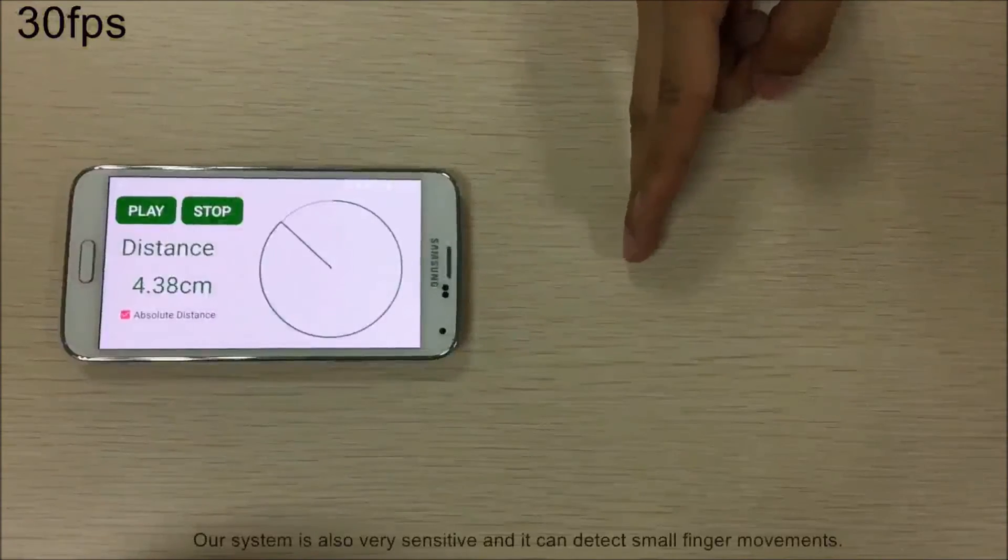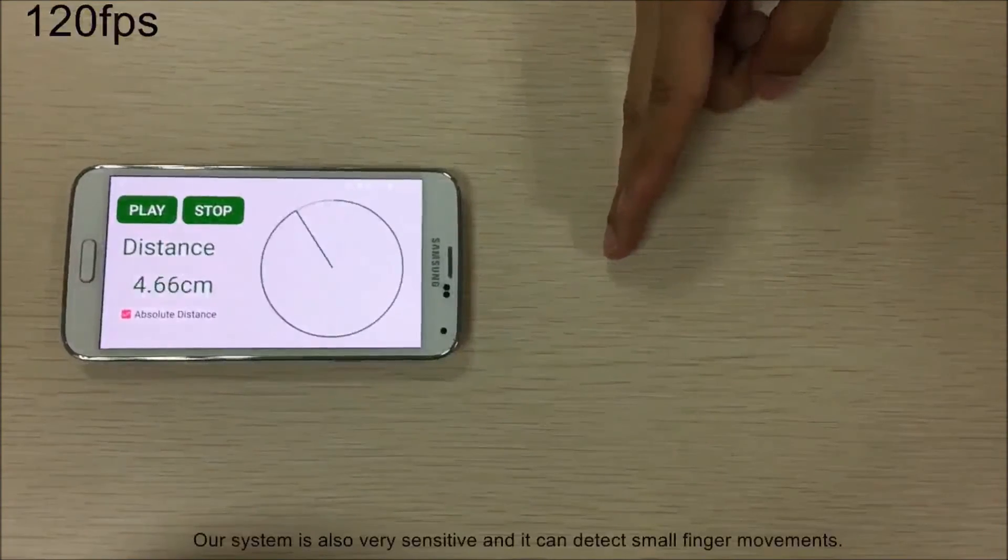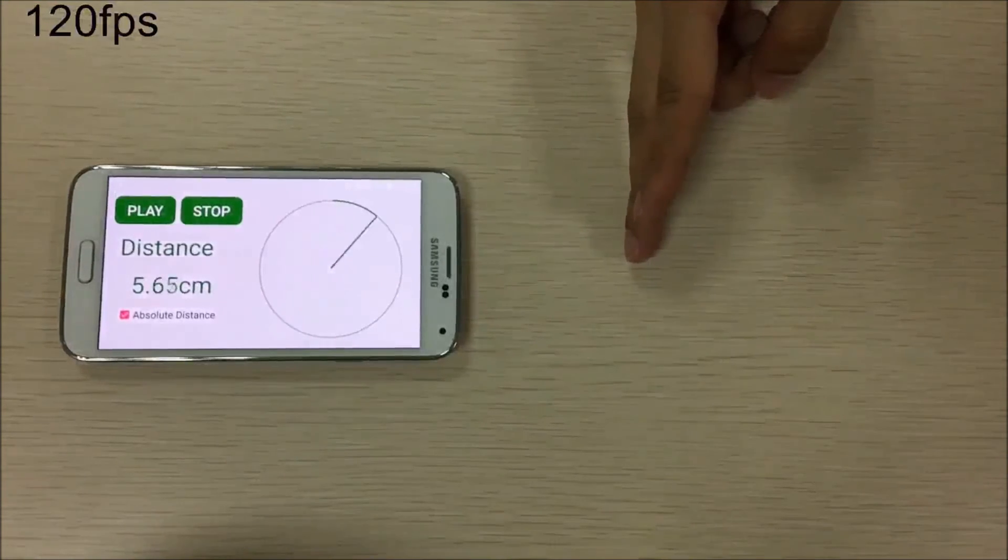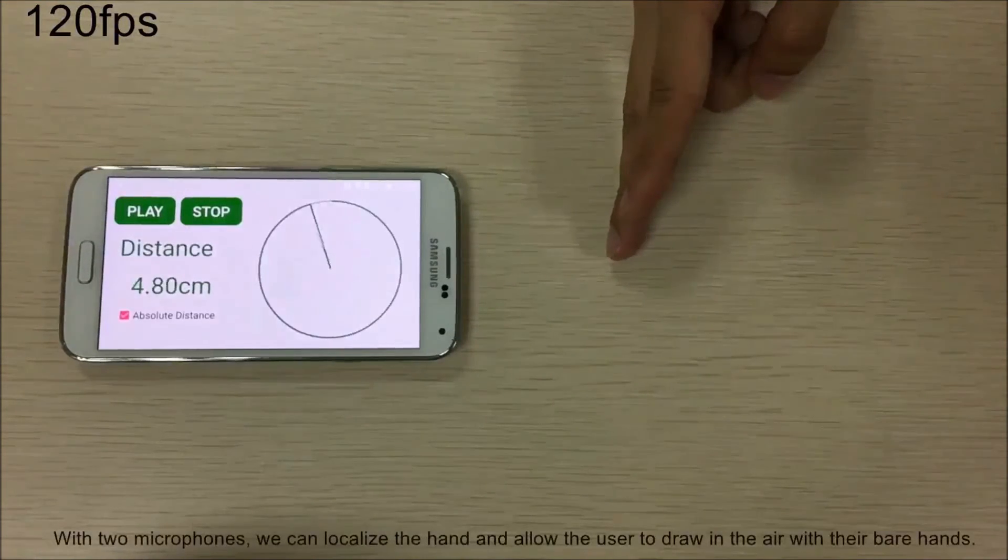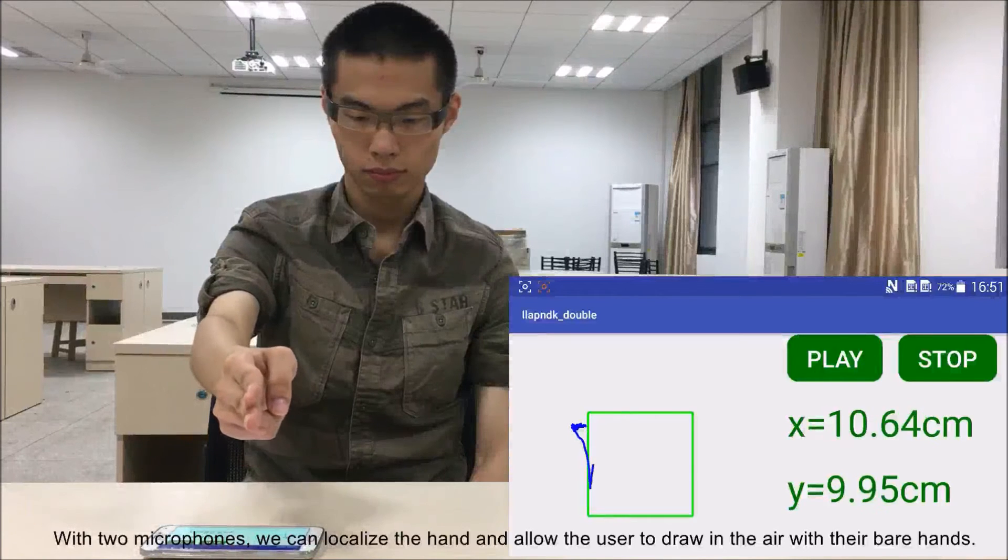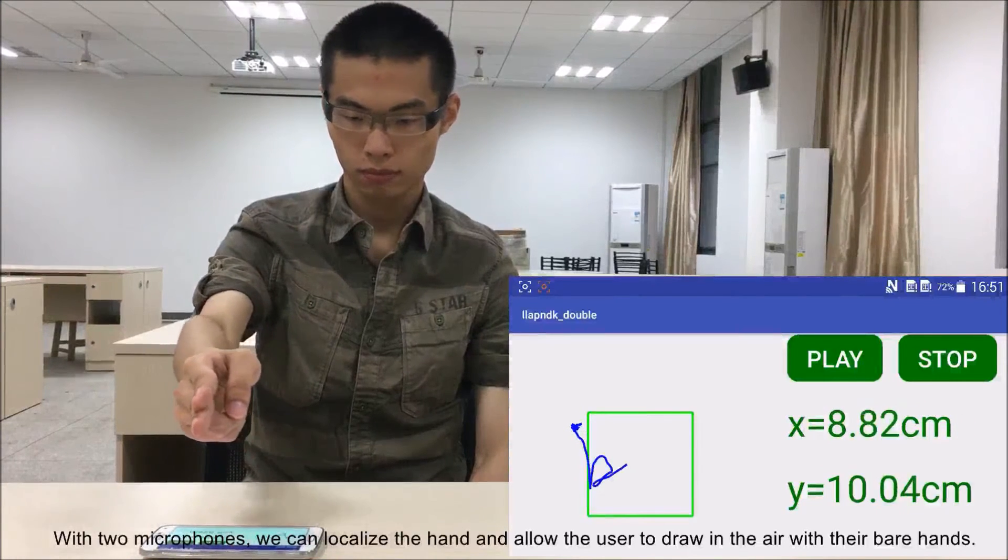Our system is also very sensitive and it can detect small finger movements. With two microphones, we can localize the hand and allow the user to draw in the air with their bare hands.